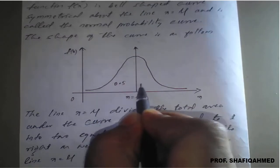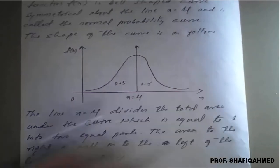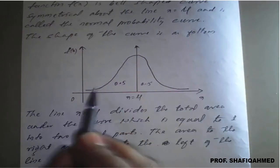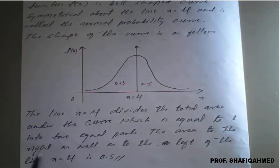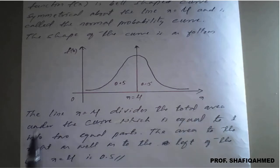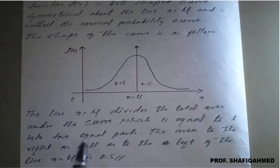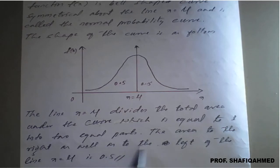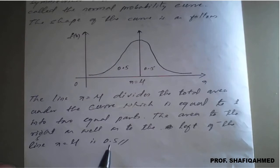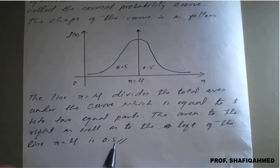This area will be 0.5 and this area will be 0.5 — left-hand side and right-hand side. If you add them you will get completely 1. The line x equal to mu divides the total area under the curve, which is equal to 1, into two equal parts. The area to the right as well as left of the line is 0.5.